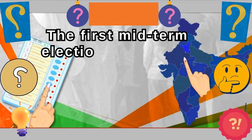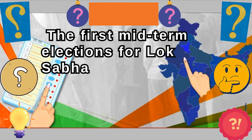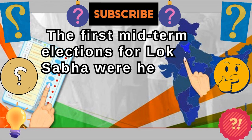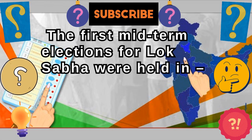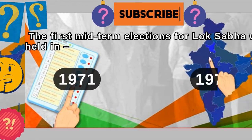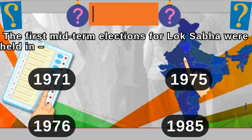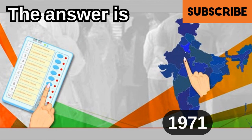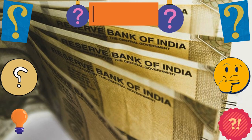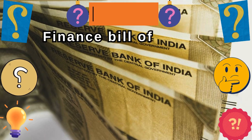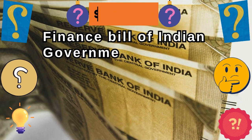The first midterm election for Lok Sabha were held in — the answer is 1971.